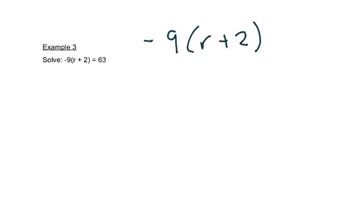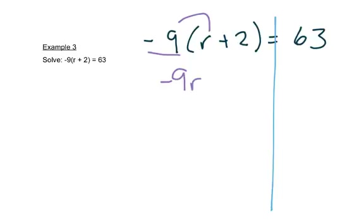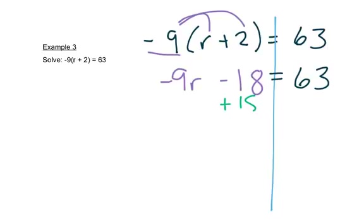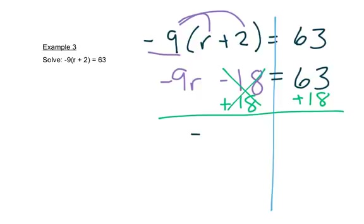In this problem we have parentheses. We're still going to start by drawing our line straight down. The parentheses mean that number is multiplied by everything inside, so we have negative 9 times r, and then negative 9 times 2 is negative 18 — we'll write minus 18. Now there's nothing else we can do on the left or right separately, so we'll start moving things. We have minus 18, so we'll add 18. That cancels out. On the right we'll add 63 plus 18, and we get 81.